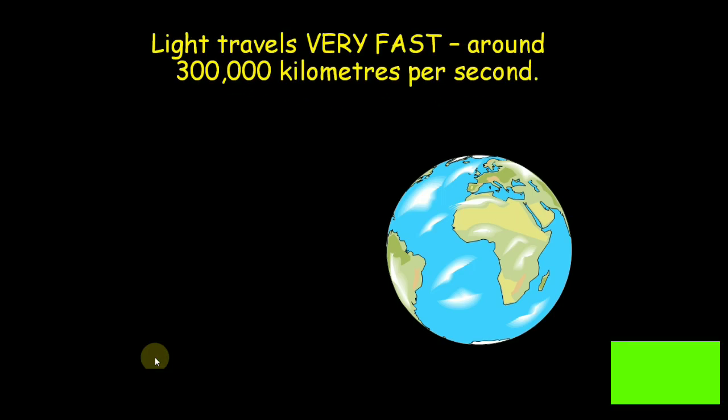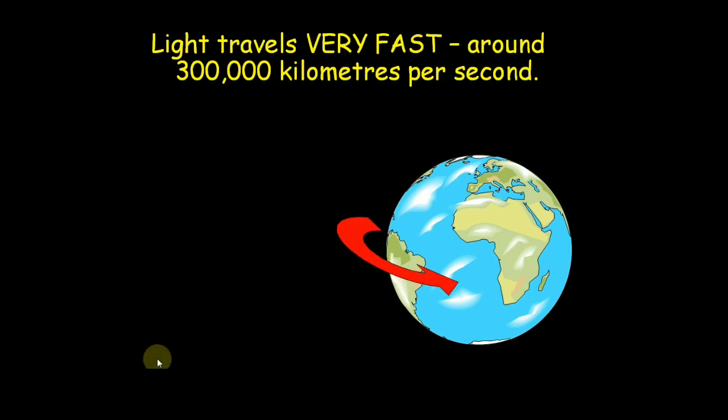Light travels very fast, around 300,000 kilometers per second. At this speed, it can go around the world 8 times in 1 second.